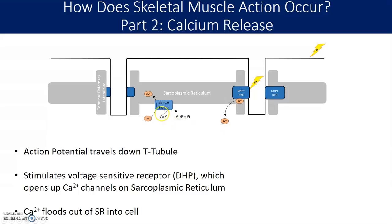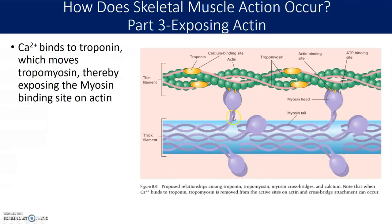Eventually when the contraction has to end, something called the SERCA pump takes the calcium back into the reservoir — we'll talk about that in a minute. But at this point, the action potential has gone down the T-tubule, stimulated the DHP and ryanodine receptors, and allowed calcium to flow out of the SR. Tons of calcium is now flowing out of the SR into the myofibril itself, and the reason for that is to expose actin. The calcium diffuses throughout the muscle cell and binds to something called troponin, which sits on top of actin — roughly one troponin for every six actin molecules.